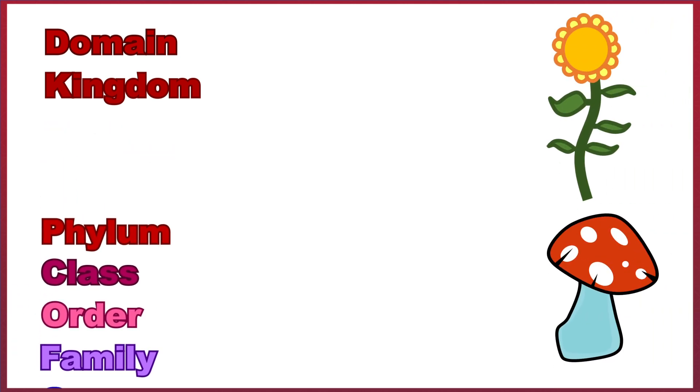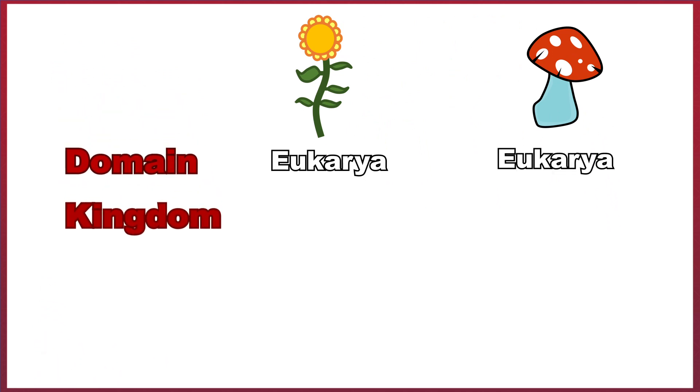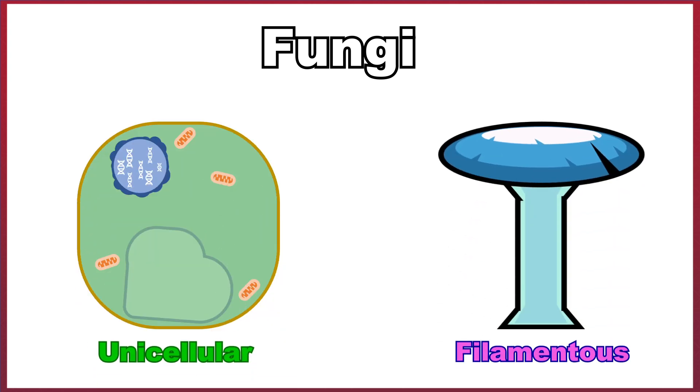When we look at plants and fungi, we see that they both belong to the same domain, eukarya, which contains all eukaryotic cells. They diverge at the next barrier, with plants and fungi having their own distinct kingdoms. Within the fungal kingdom, there are two distinct types of fungi, unicellular and filamentous.